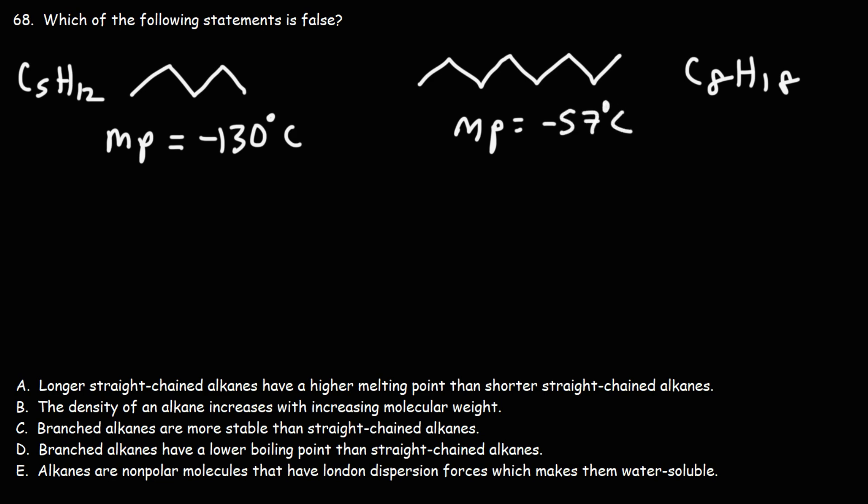Octane has a significantly higher melting point than pentane. And for one reason, it has more van der Waals forces, or London dispersion forces, acting on it. So A is a true statement. Longer-chained alkanes have higher melting points than shorter-chained alkanes.